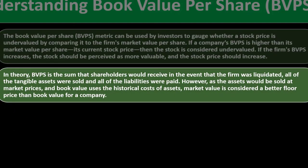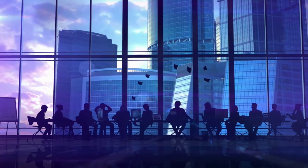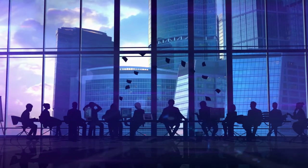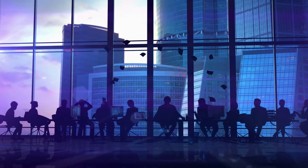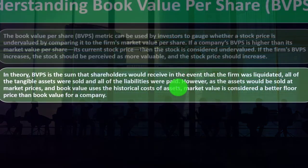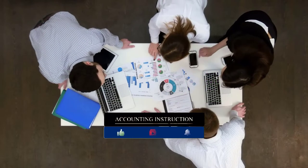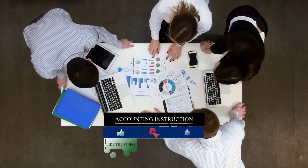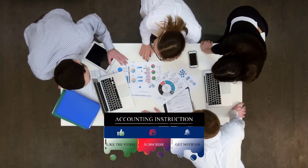In theory, book value per share is the sum that shareholders would receive in the event that the firm was liquidated — all tangible assets were sold and all liabilities were paid. We don't want the company to liquidate; we want them to invest in assets to generate revenue and stimulate growth through stock price appreciation and possible dividends. But if they were to go bankrupt, just the value of the stuff on the books — equipment and so on — sold and liabilities paid off, the difference would be distributed to stockholders.